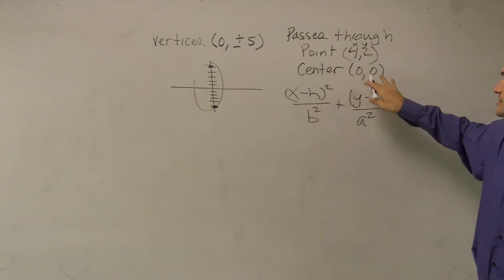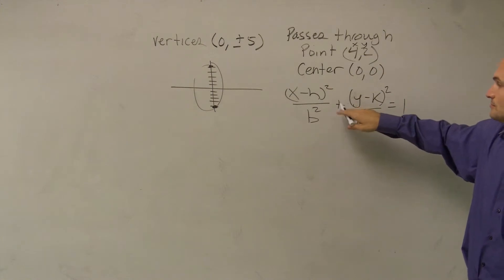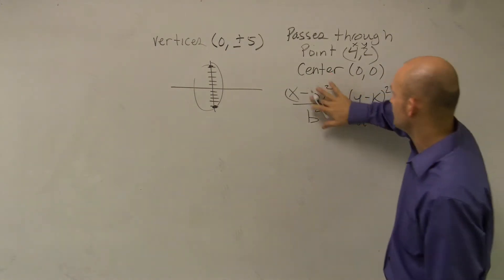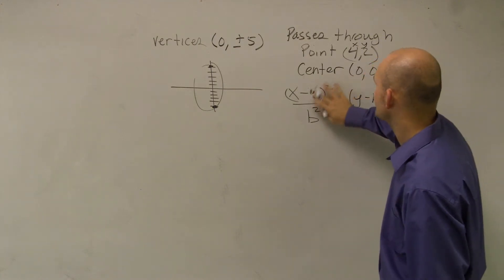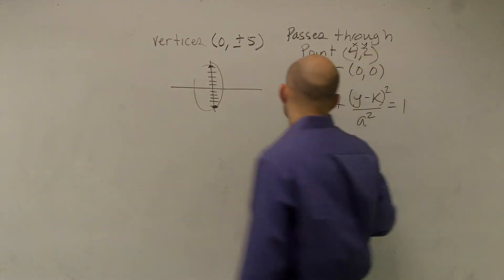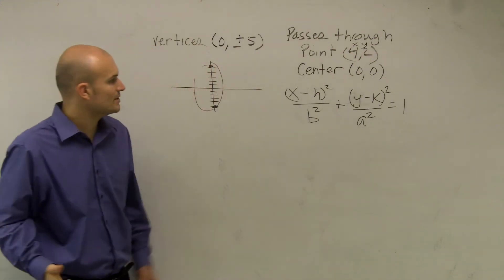Now, thankfully, our center is (0, 0), so I know that I can plug in 0, 0 for H and K. Let's write the points we know.